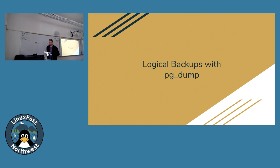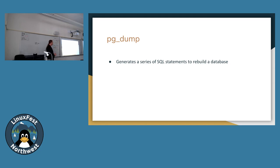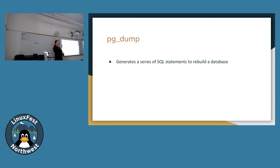We'll also talk about pg_dump. When you think of backups, this is probably what you're most familiar with. pg_dump is a tool that generates a series of SQL statements that would be able to restore your database to that particular snapshot. It connects in, looks at your table definitions, indexes, constraints, and figures out the commands needed to rebuild them, including the data itself. It's pretty well tested technology.